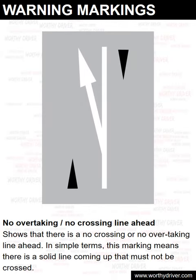No overtaking, no crossing line ahead. This marking shows that there is a no crossing or no overtaking line ahead. In simple terms, this marking means there is a solid line coming up that must not be crossed.